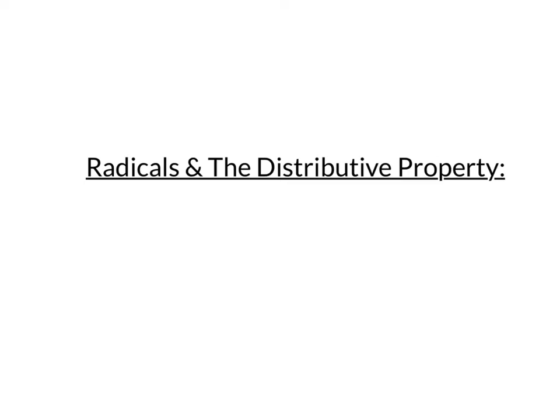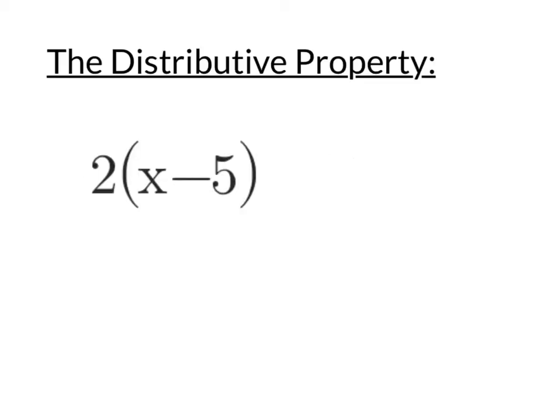Let's continue simplifying radical expressions, this time emphasizing the distributive property. Remember that the distributive property is really the distributive property of multiplication over addition or subtraction. It usually looks like a coefficient — like 2 — times a set of parentheses. We take that 2 and distribute it to every term inside: x gets multiplied by 2, and the minus 5 gets multiplied by 2 as well.